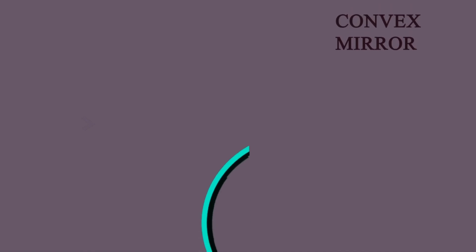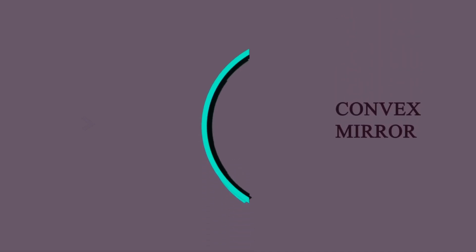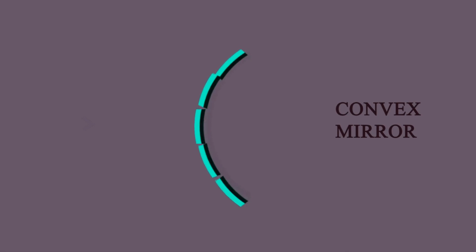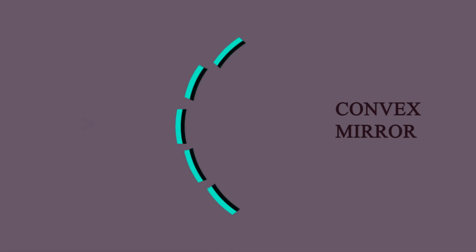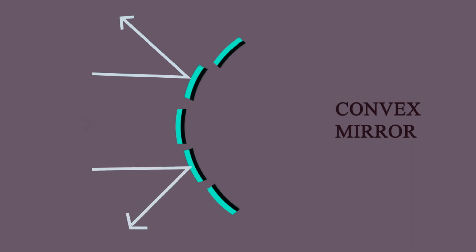If you cut a convex mirror into very small pieces, all the pieces will look like a plane mirror and the reflection happens the same way. All portions obey the laws of reflection. Light falls here and is reflected, so it obeys the laws of reflection. The same thing happens in every section — the incident rays fall and are reflected — so all portions follow the laws of reflection.